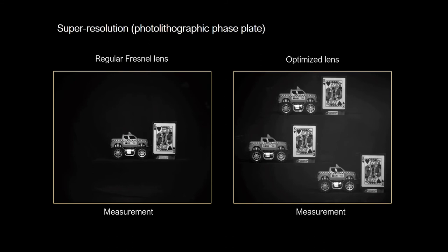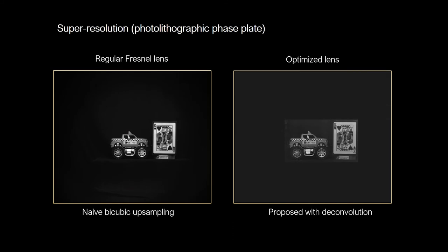For super-resolution imaging, the optimized lens multiplexes sub-pixel shifted image copies across the sensor, which the reconstruction assembles into a higher resolution image. We optimized the lens and reconstruction to upsample by 2x.